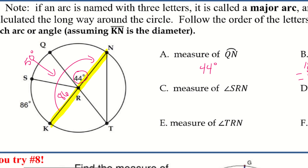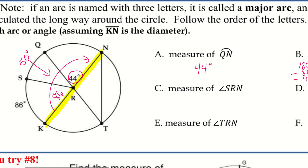Let's look at the measure of arc SRN — that's S to R to N. This is where the arc addition postulate comes in. Arc SRN contains 50 and 44 inside, so I add those together to get the whole thing, which is 94 degrees.